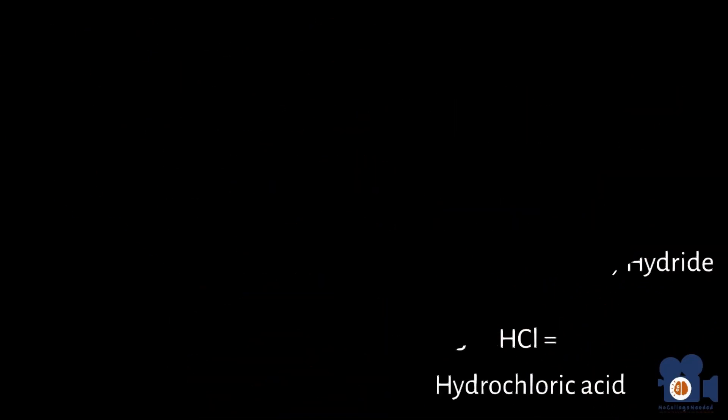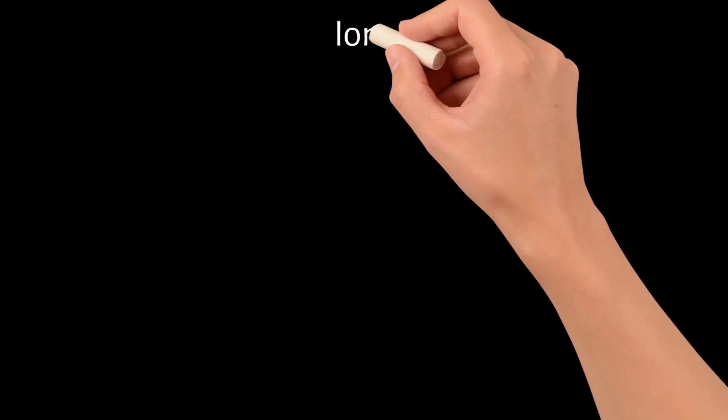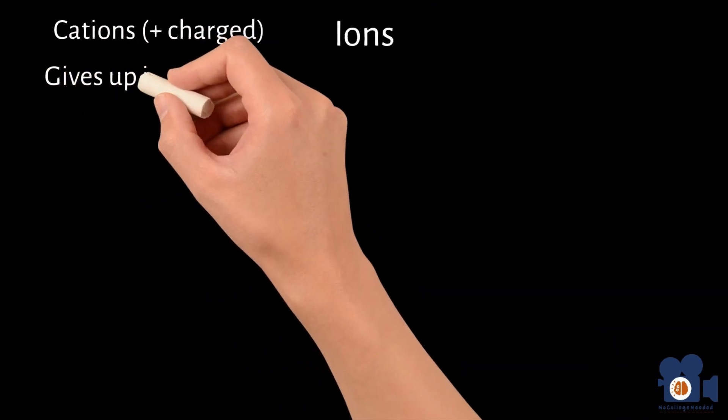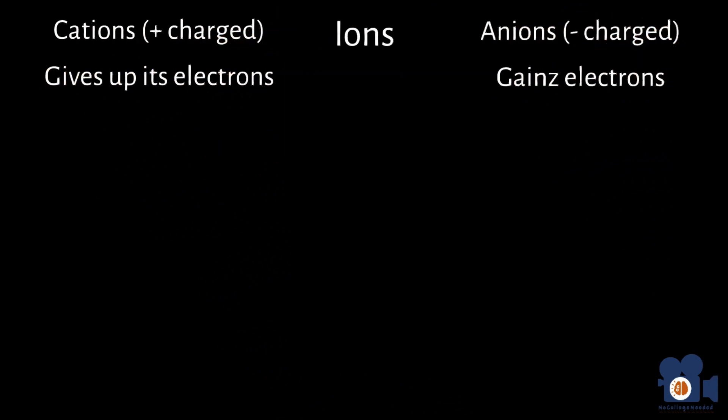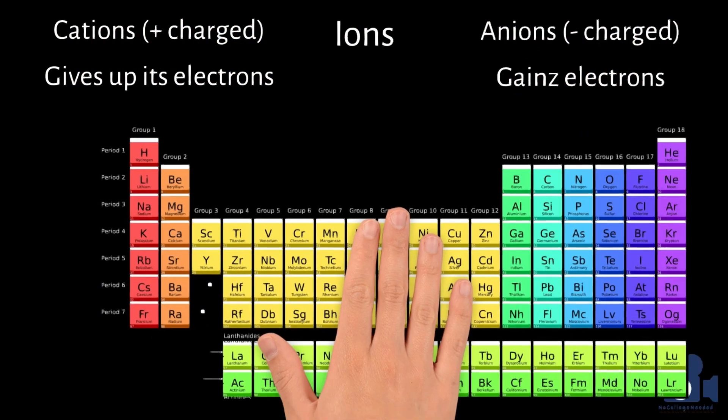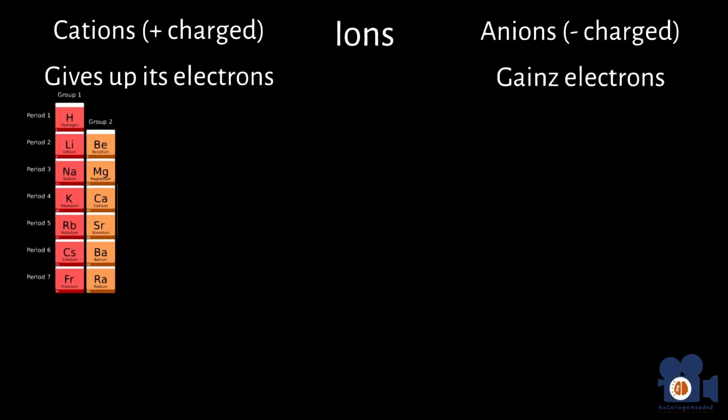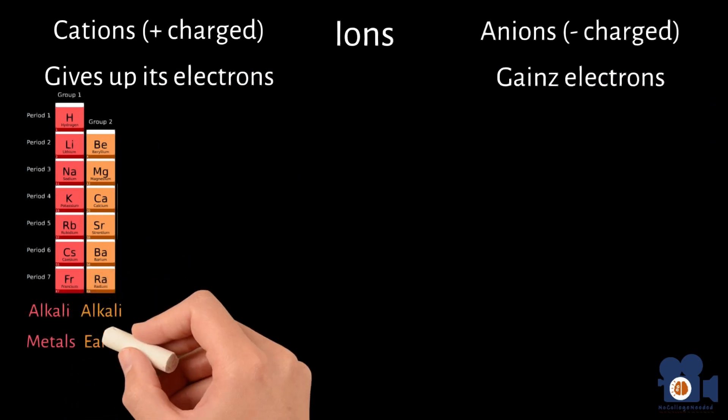Recall from Unit 2.6, where we went over ions, that they usually consist of two elements: one that gives up its electrons forming cations, and another that gains electrons forming anions. The majority of cations formed are classified as a type of metal, and the first two columns are called the alkali metals and the alkali earth metals.